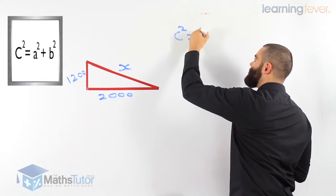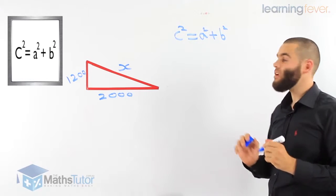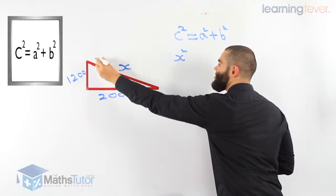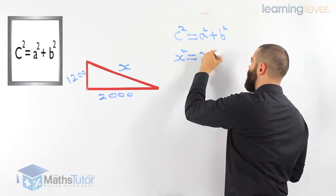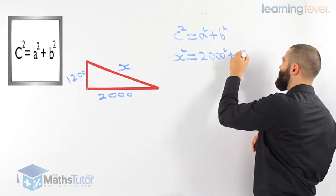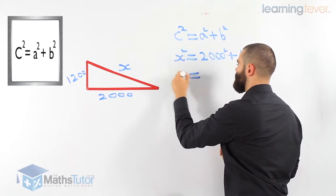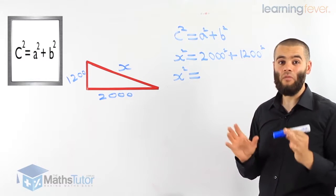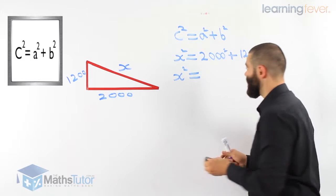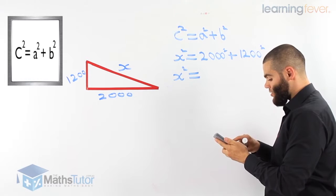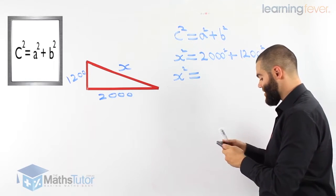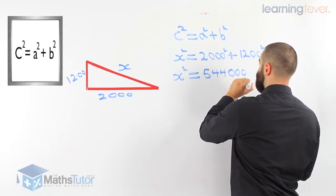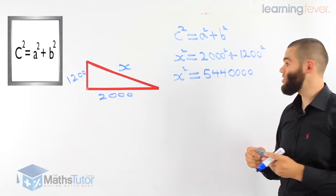We know C squared equals A squared plus B squared. C squared is the hypotenuse; A squared and B squared are the two short sides. Our hypotenuse is marked with an X. So X squared equals 2,000 squared plus 1,200 squared. We use our calculator and put in the whole number sentence: 2,000 squared plus 1,200 squared, then press equals. The answer is 5,440,000.